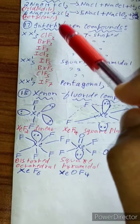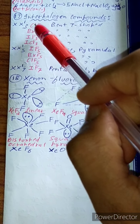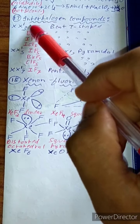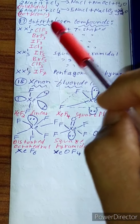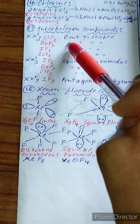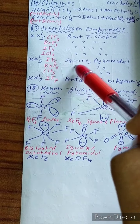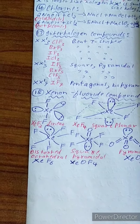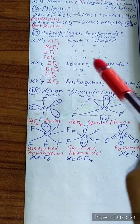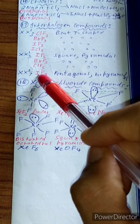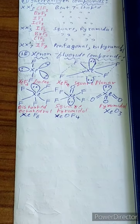Interhalogen compound shapes: XX′₃ compounds (ClF₃, BrF₃, IF₃, ICl₃) are all bent-shaped (T-shaped). XX′₅ compounds (IF₅, BrF₅, ClF₅) are all square pyramidal. XX′₇ compound: IF₇ is pentagonal bipyramidal.